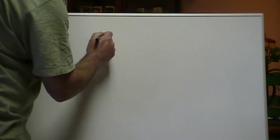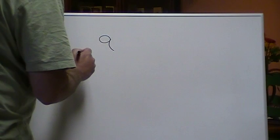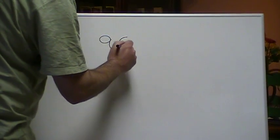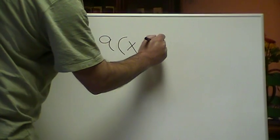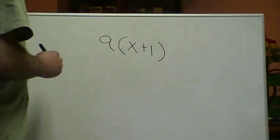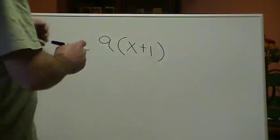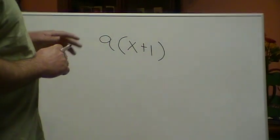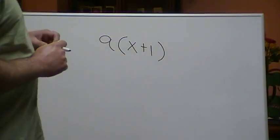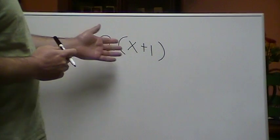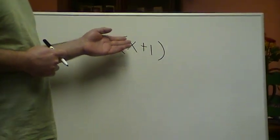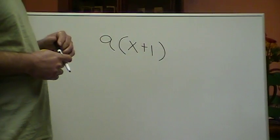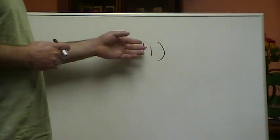Here's the basic format. You're going to have a variable or number times something in parentheses — we'll say x plus 1. What we want to do is multiply these two terms. Of course, we can't add what's in the parentheses because they're unlike terms; you can't add an x and a 1. But we still have to multiply it by this a.